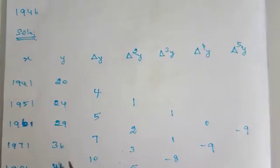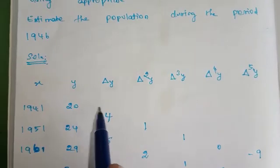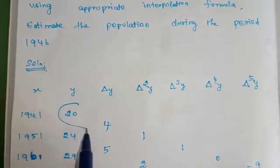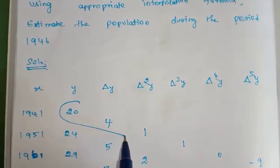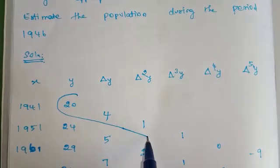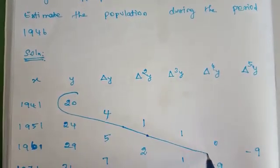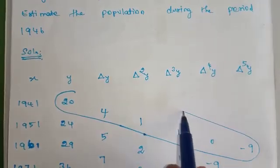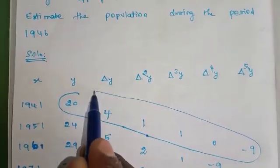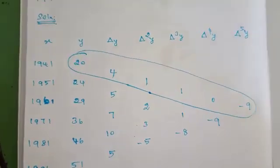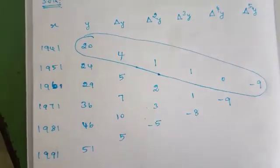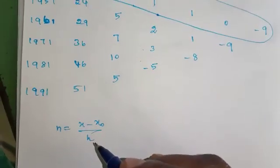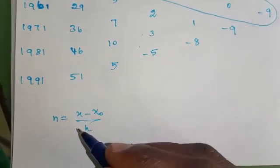Newton's forward table is now ready. We use the values: y₀ = 20, Δy₀ = 4, Δ²y₀ = 1, Δ³y₀ = 1, Δ⁴y₀ = 0, and Δ⁵y₀ = minus 9.